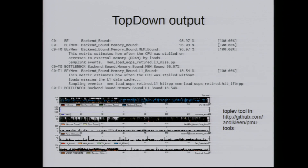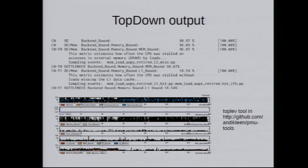I have a tool called PMU Tools — an open source project — which implements top-down. For example, I measured a program and you can see the output: it's back-end bound, memory bound. In this case it's a memory bound issue, and the tool computes the bottleneck. So in this case, I would only look at memory-bound related issues and nothing else. You can also view it as a time series to see how performance evolves over time. It's really important to first find what your bottleneck is and go from there — it doesn't make sense to focus on things that aren't your bottleneck.